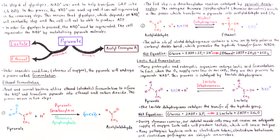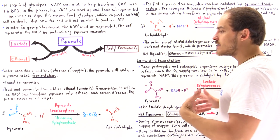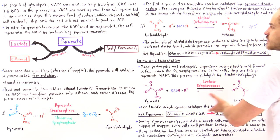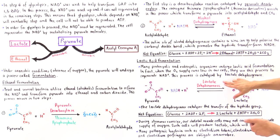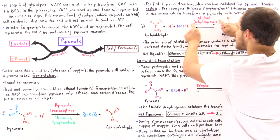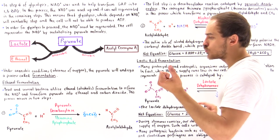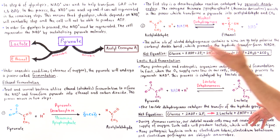Many prokaryotic and eukaryotic organisms undergo lactic acid fermentation. When the oxygen supply runs low in our cells, they use this process to regenerate NAD+. This process is catalyzed by an enzyme known as lactate dehydrogenase. Like other dehydrogenases, including the one used in step 6 of glycolysis, lactate dehydrogenase catalyzes the transfer of a hydride group from one molecule to another — in this case, from NADH onto the pyruvate molecule.